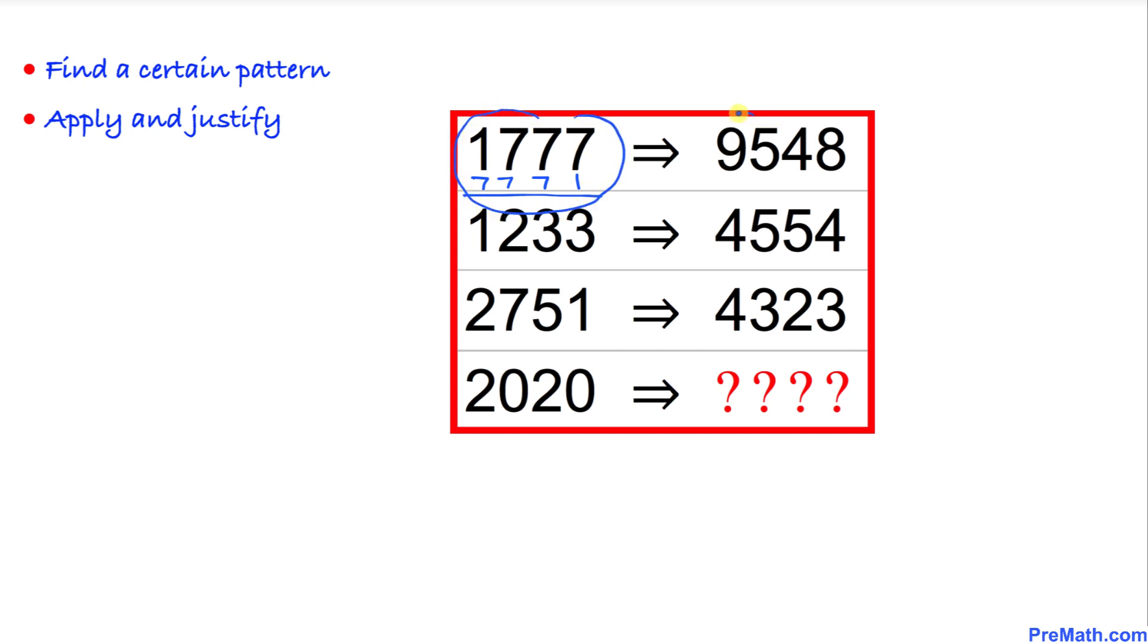Let's repeat the same process for the next number. We're going to write it in reverse order, so that is going to be 3321. Let's add this number up and we get 4554.